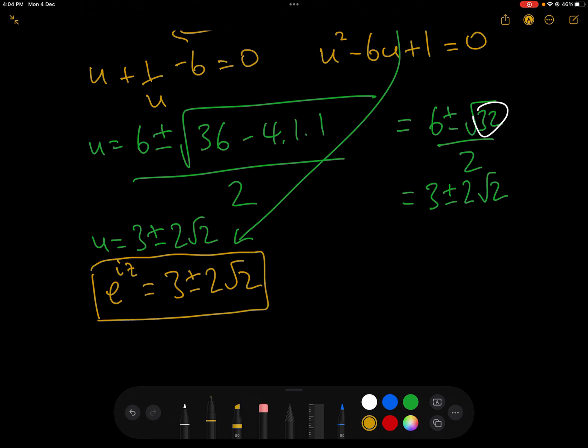And to solve this equation here, we just need to take logs. And we did taking logs of complex numbers in our previous Gresti Academy video. So taking logs, we have iz = log(3 ± 2√2).